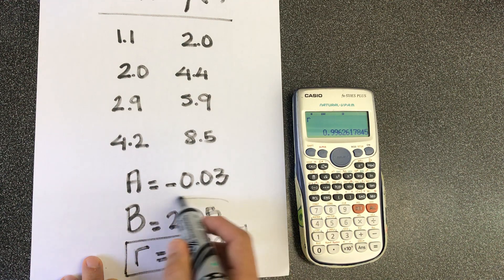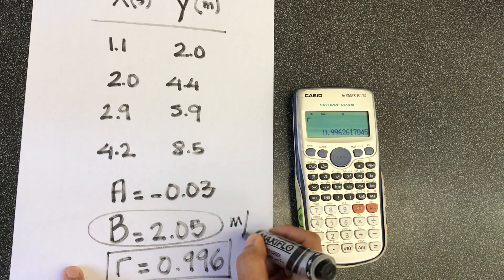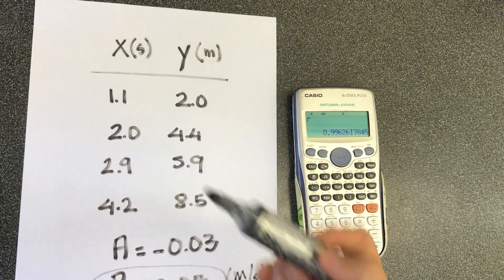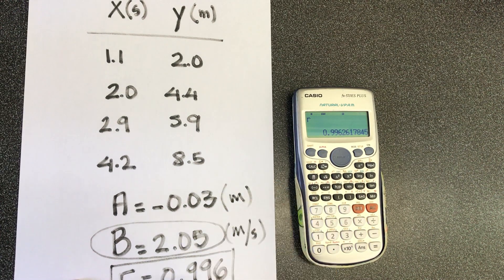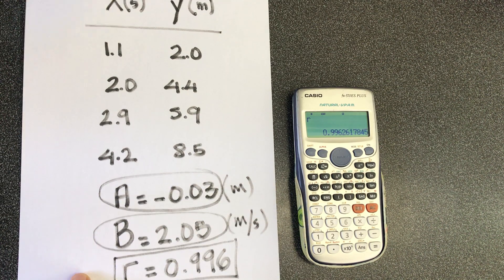Now, this is the slope. It's very important to post a unit for the slope. The unit for the slope is going to be meters per second, because it's the unit of y divided by the unit of x. The y-intercept has a unit of y, which is in meters. And you see it's negligible, basically, or very small.